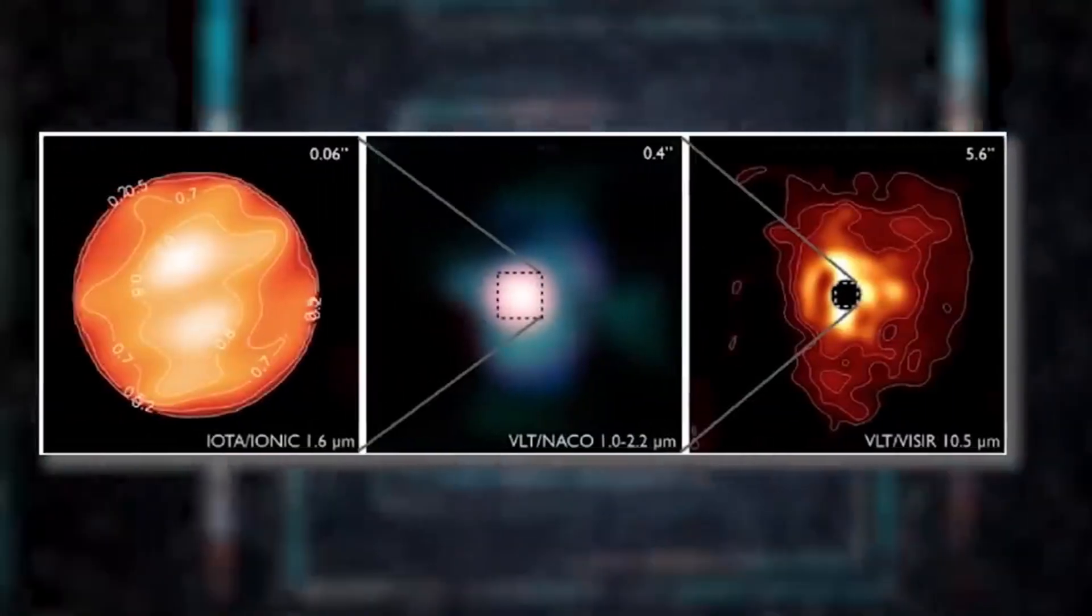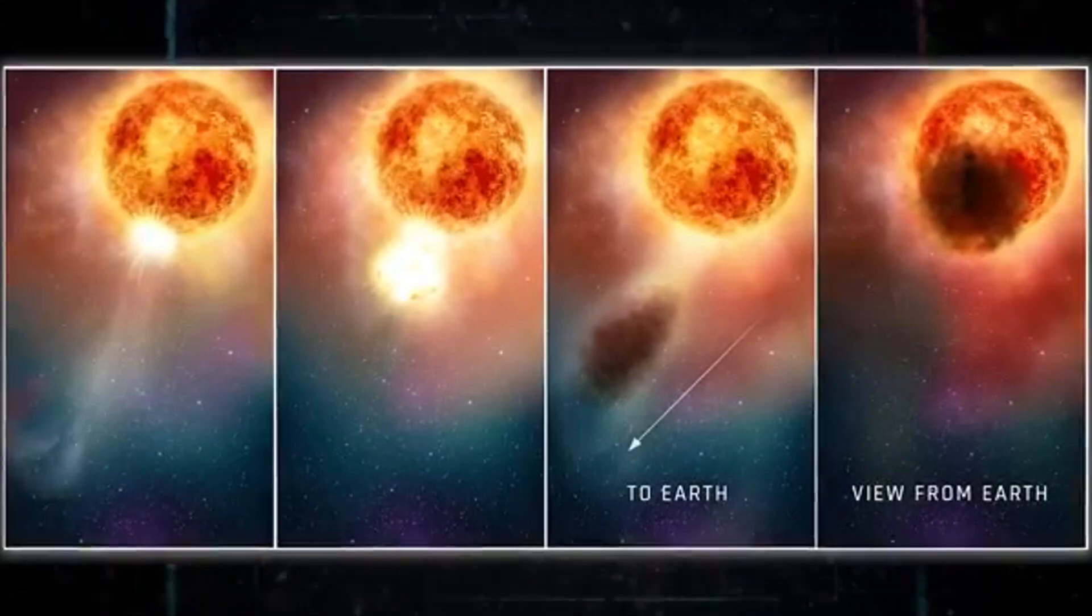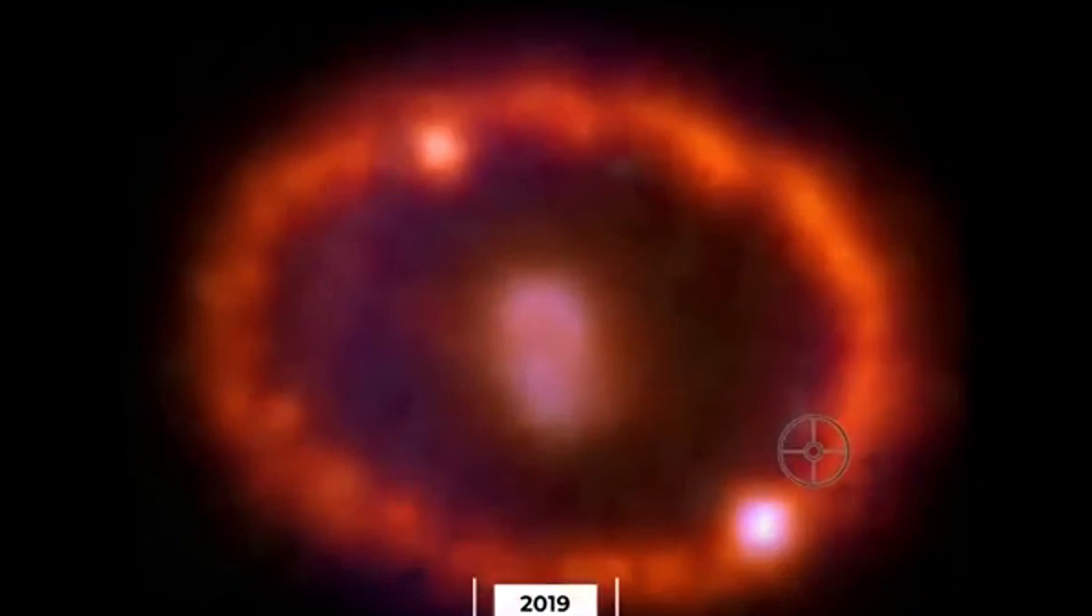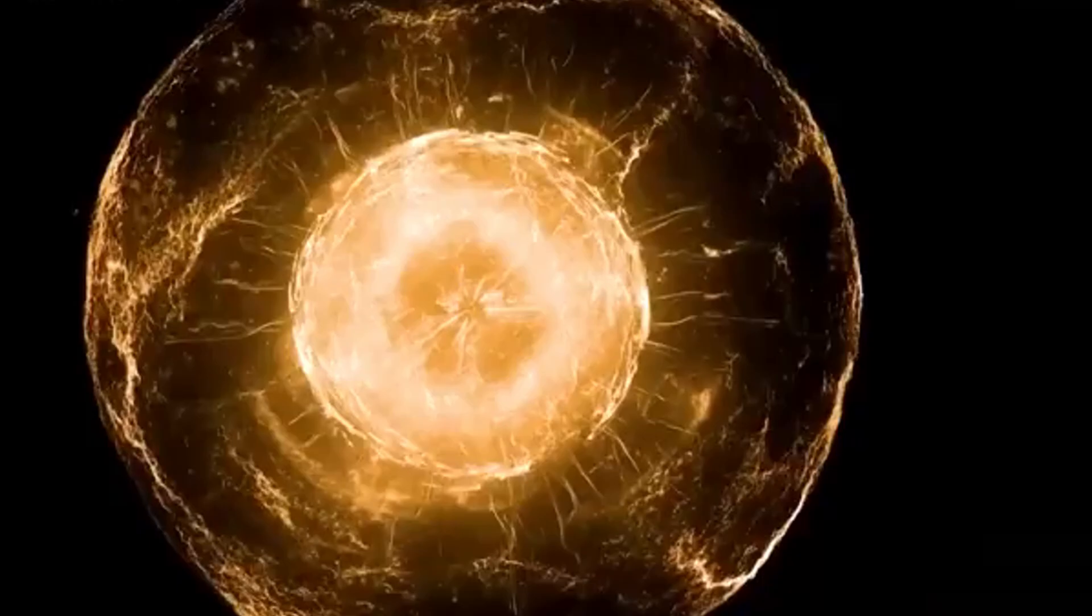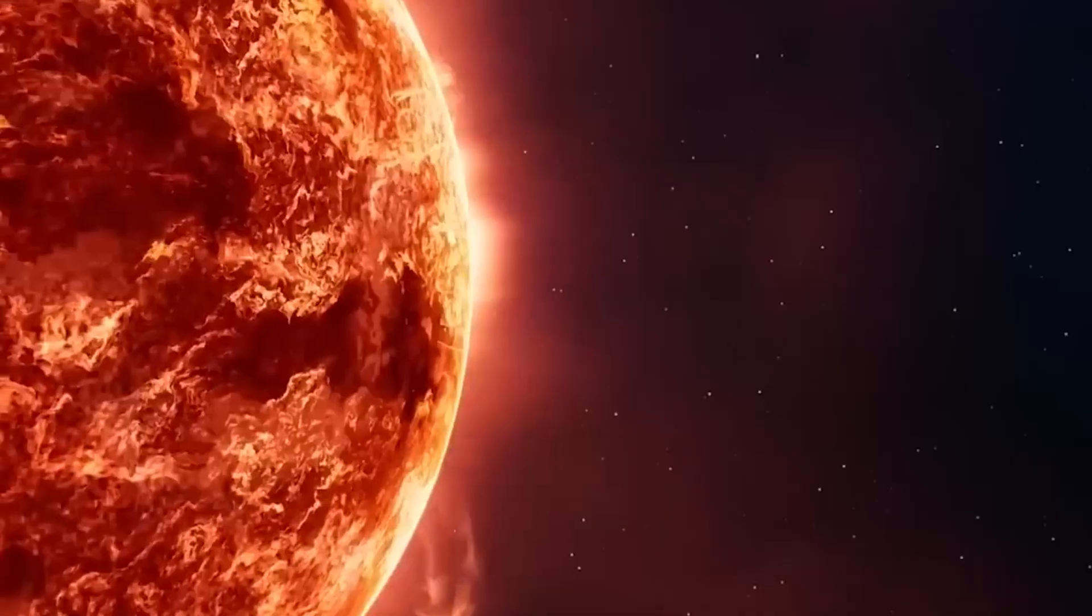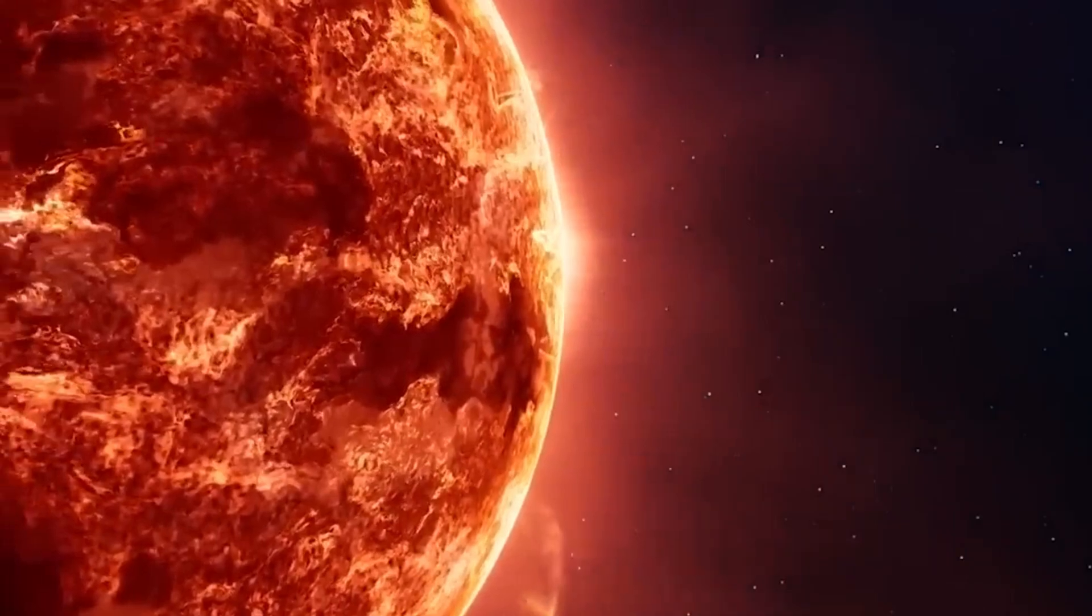Regarding the possibility of a Betelgeuse supernova, astronomers speculate that it could occur at any time within the next 10,000-100,000 years. Based on factors such as the star's color, brightness, size, and estimated age, scientists suggest that Betelgeuse is currently in the early stages of helium-to-carbon fusion. This process must continue through oxygen, silicon, and finally, iron before the star's core collapses under its own gravitational pull, leading to a cataclysmic explosion.